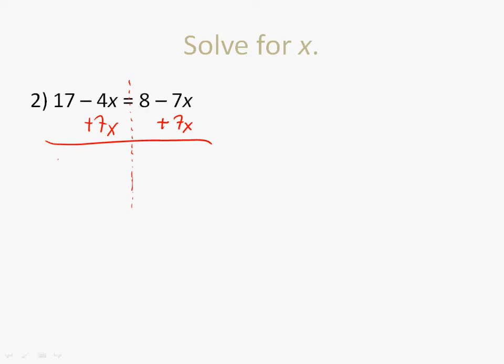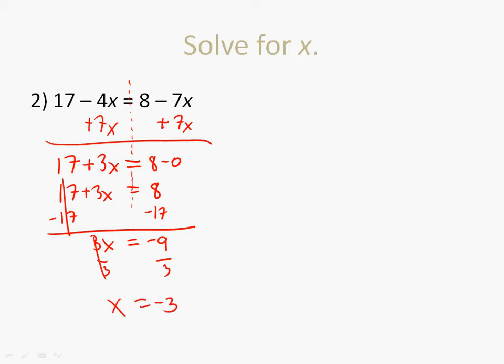So we now have 17 minus 4 plus 7 that gives me plus 3x equals 8 and then minus 7x plus 7x that's zero. So now I have 17 plus 3x equals 8 and now it just turned back into a simple two-step equation. Minus 17 minus 17 so 3x equals 8 minus 17 which will be negative 9, divide by 3 divide by 3 and x equals negative 3.